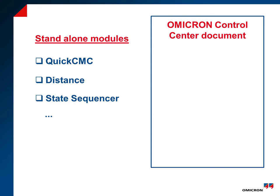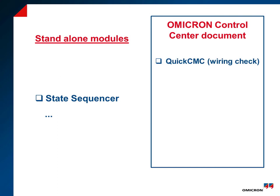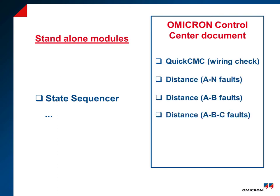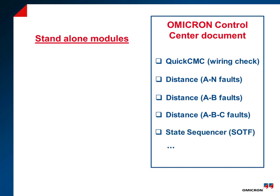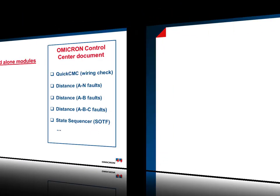For instance, the document can contain a variety of modules, like a quick CMC module for the wiring check, distance modules to check the impedance zones, or state sequencer modules to test the switch-on-to-fault protection function.